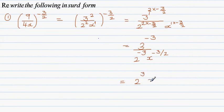This goes up and this comes down, so this simplifies to 2 cubed times x to the power 3 halves over 3 to the power 3.